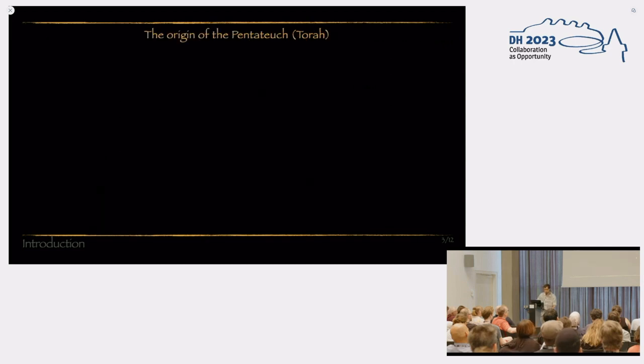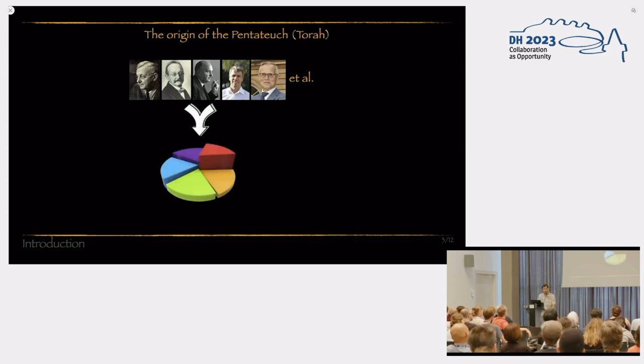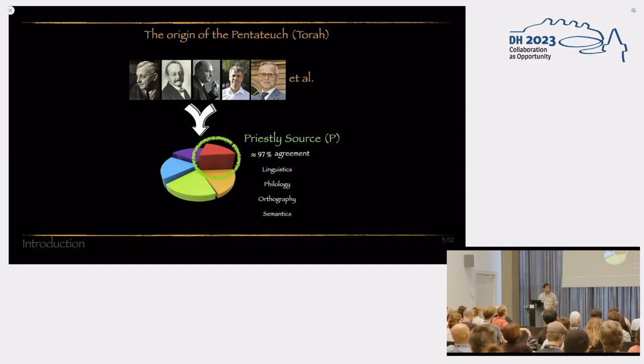Now, why is all this interesting? This is interesting, specifically for our case, that all of these people who usually disagree on just about anything, do happen to agree on one specific piece of the biblical pie, known mainly as the priestly source, and we will refer to it as P. And the agreement on which parts of the Pentateuch belongs to the source is about 97%. We counted it ourselves.